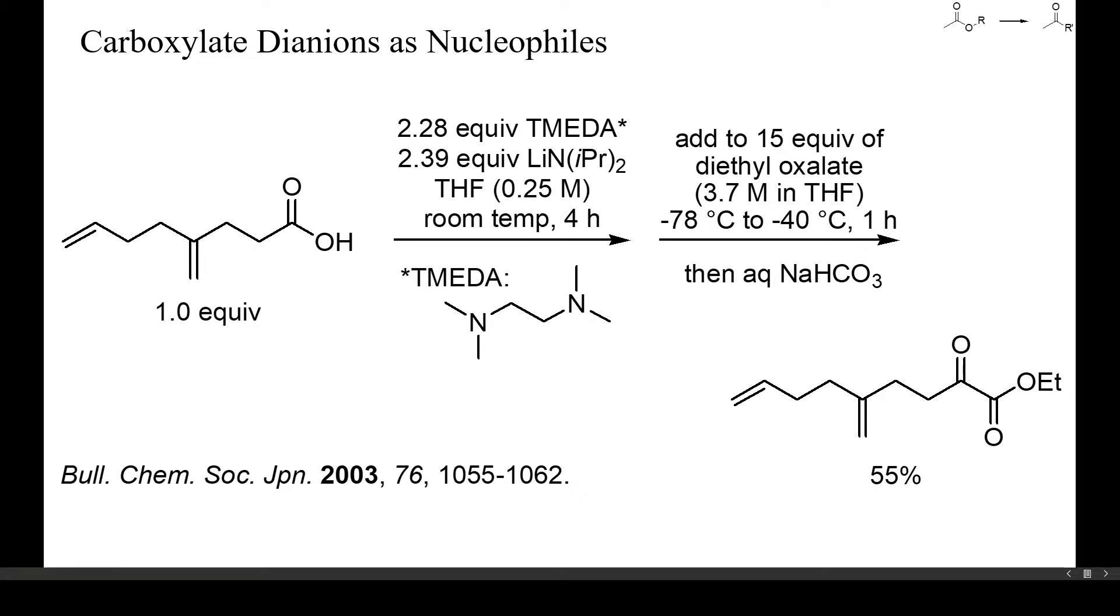Carboxylate di-anions can also be used to prepare alpha-keto esters from oxalates, as shown here. Unlike in the previous example, here a large excess of electrophile was used, but the yield of keto ester was only fair. Di-anions are also strong bases, and one potential side reaction here was the formation of ethylene by elimination.